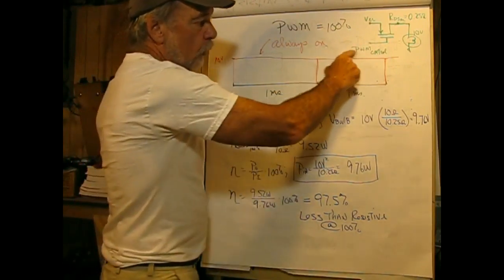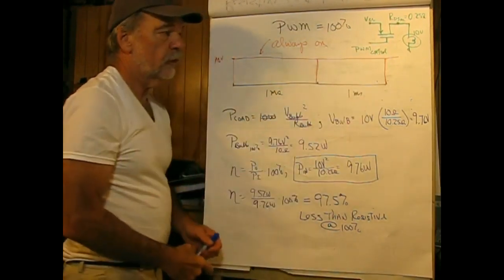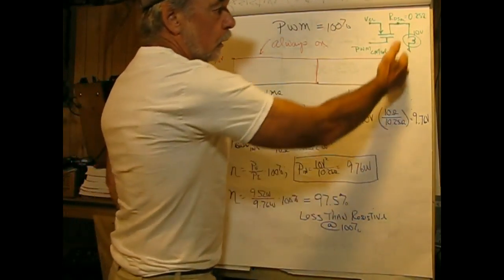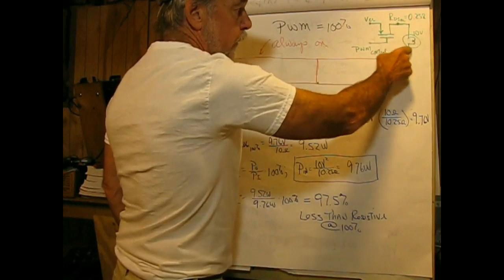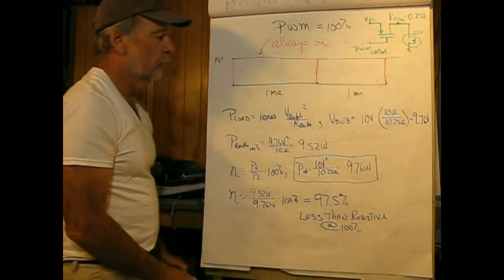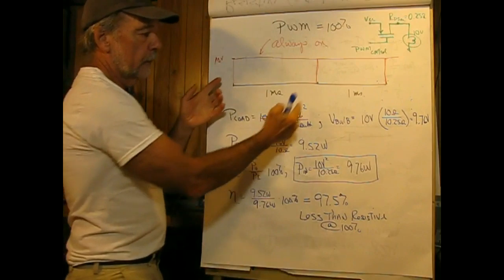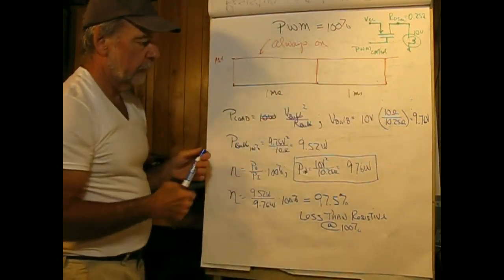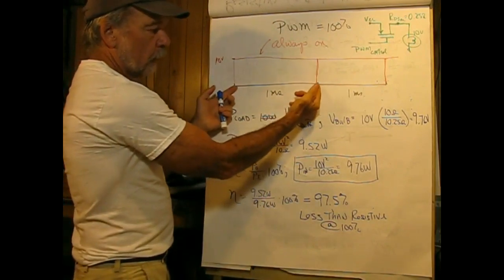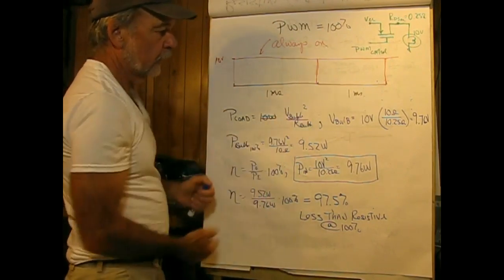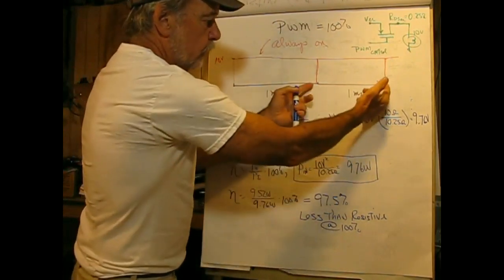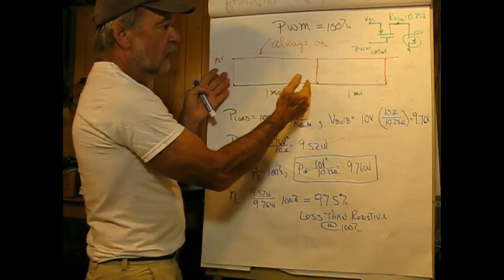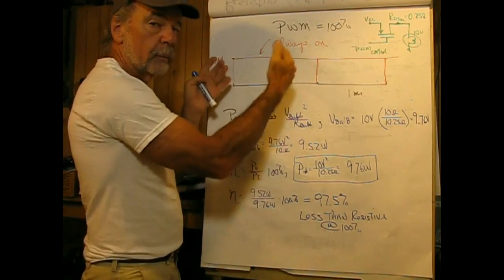The load — our 10-volt light bulb — is connected against ground. What our PWM signal looks like is this. What you're looking at here is called a PWM period, and a PWM period is the time where a pulse width modulation waveform repeats itself. At 100%, it's not too exciting because it's on basically all the time.